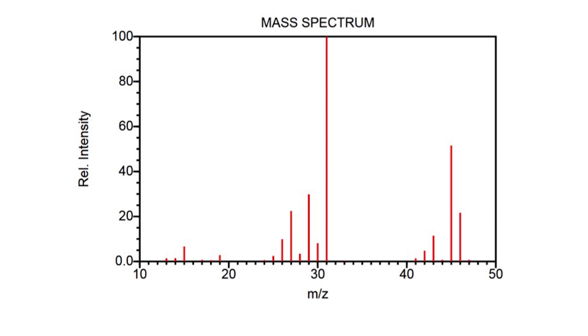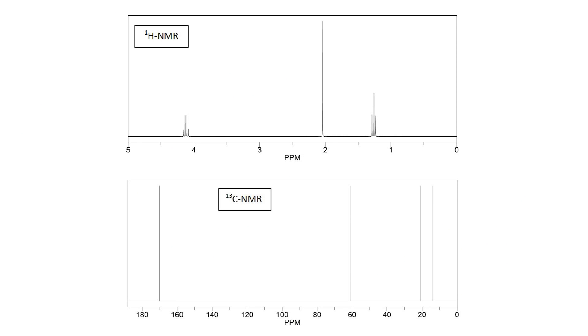The second spectra to look at is the mass spec. This will tell you the molecular weight of your compound, and the molecular weight together with the melting point or boiling point that you did earlier will tell you a lot about which compound you have. The third spectra to look at is an NMR spectra. The NMR spectra will tell you about the actual structure of your compound, and you'll be able to tell, for example, if you have a primary or a secondary amine.